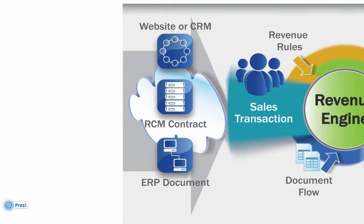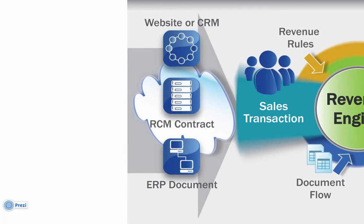Starting from left to right, on the left-hand side we have a CRM. There's a gray arrow with the CRM, RCM contract, ERP document, and this is really the source of the revenue transaction. This is how you go to market, and we'll come back and talk about that in more detail later. That's the place where your revenue starts, and the main thing will be understanding how you go to market and how to best capture the right transaction to push into the revenue engine.